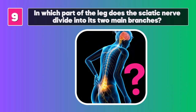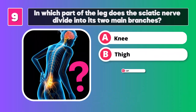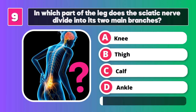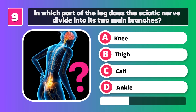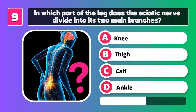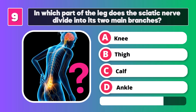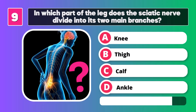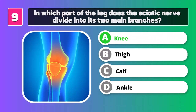In which part of the leg does the sciatic nerve divide into its two main branches? A. Knee.